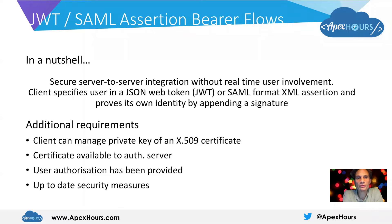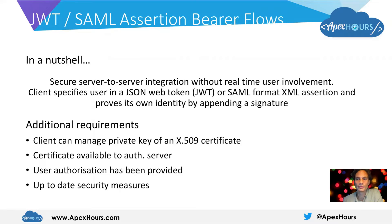Both of these flows are intended for server-to-server use where we're not prompting the user for direct involvement. In the JWT Bearer flow, the client constructs a JSON Web Token and signs it with an X.509 certificate. For the SAML Assertion Bearer flow, the client constructs an XML assertion and signs it with a certificate. That signature is checked by the auth server in both cases, and that provides the basis of identity.